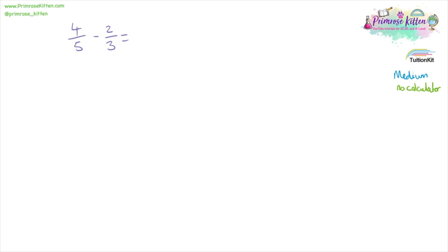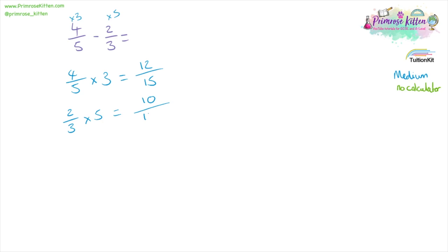Four over five minus two over three. Again, we need to make the bottom numbers the same, so we times this one by three and times this one by five. Four over five times three: four times three is 12, five times three is 15. Two over three times five: two times five is 10, three times five is 15. So the sum we're actually going to be doing is 12 over 15 minus 10 over 15, which is two over 15.